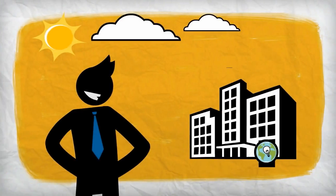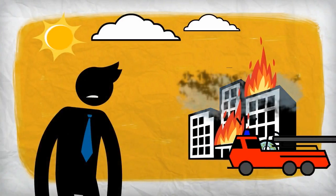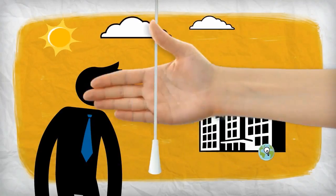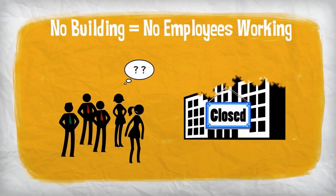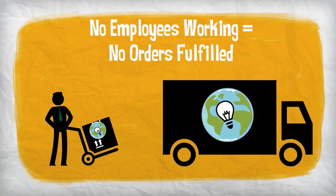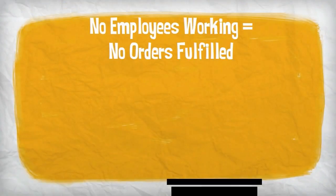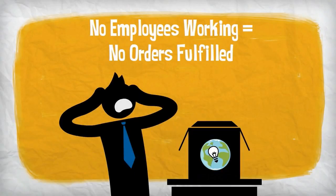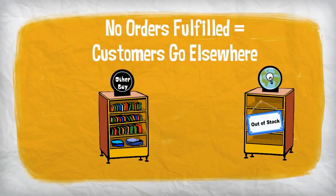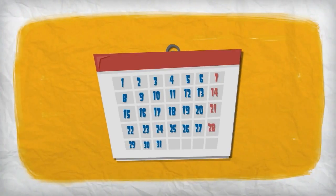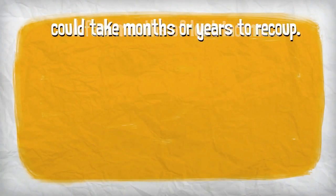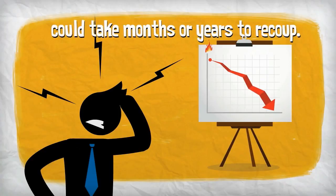Let's say your manufacturing business suffers a fire. Your building and its contents are a total loss. Without a building, your employees are unable to return to work. Without your employees, sales orders go unfulfilled. When they don't receive their orders, customers resort to taking their business elsewhere. While it may only take a few months to rebuild or establish your business elsewhere, the loss of income during that time could take months or even years to recoup.